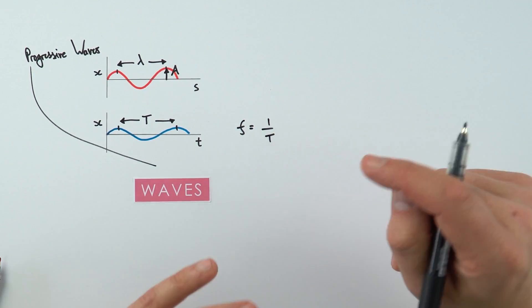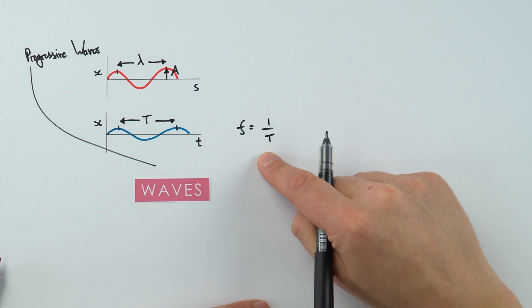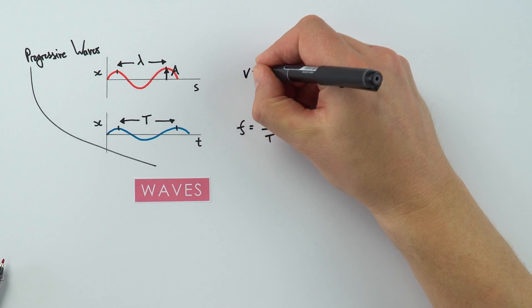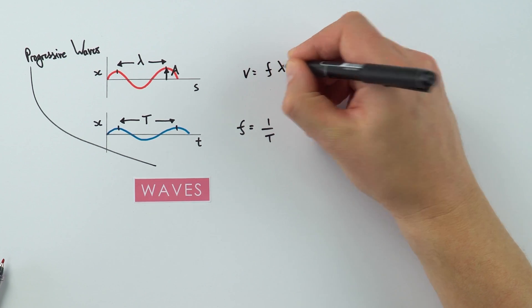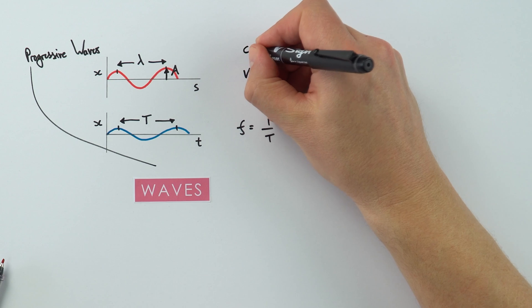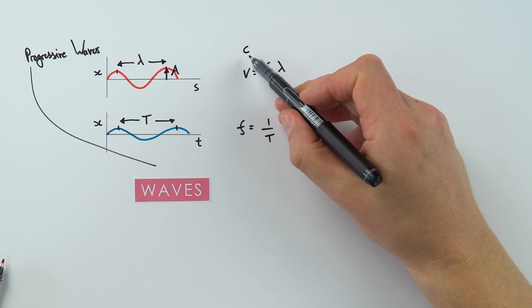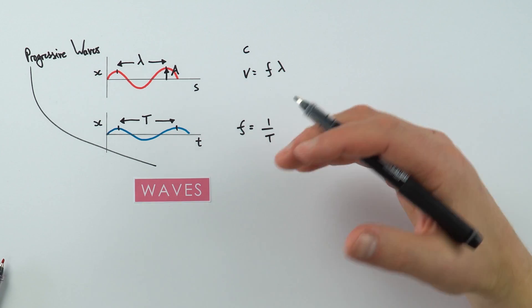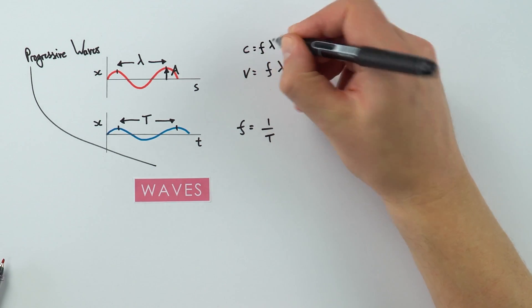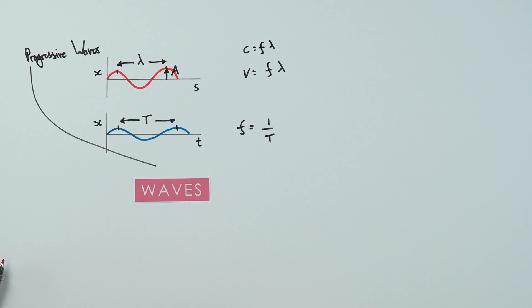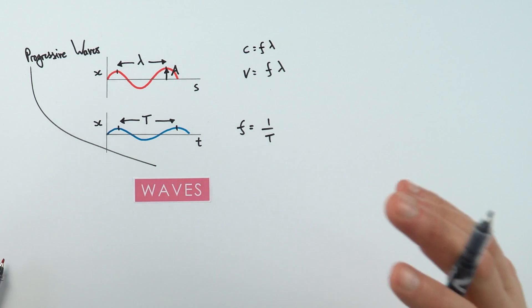We measure frequency in hertz and the time period in seconds. This is a really useful equation for waves. The other one that you might have seen is that v equals f lambda. Here, that's wave speed. Sometimes we use the letter c to represent wave speed, sometimes we use v, depending on the context in the course you're doing at A-level. Both of these say that the frequency times the wavelength is equal to the speed of that wave.